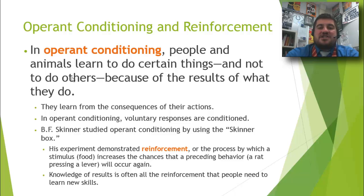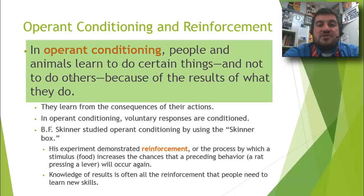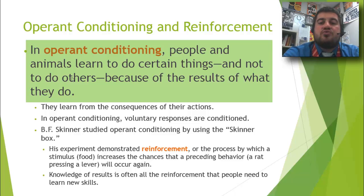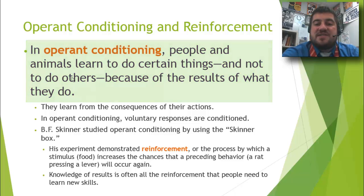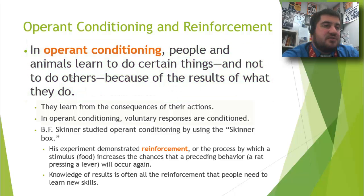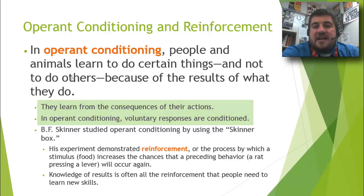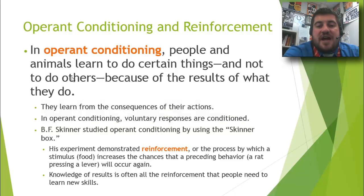In operant conditioning, people and animals learn to do certain things and not to do others because of the results of what they do — they learn from the consequences of their actions. You don't touch a hot stove because at a very young age you might have done it and burned yourself. You don't want to do that again.